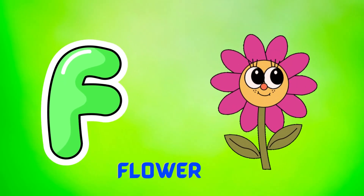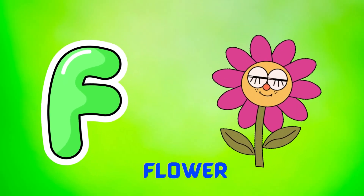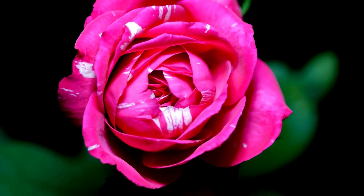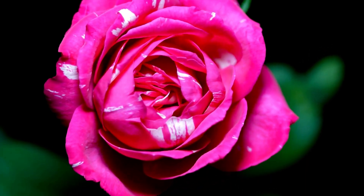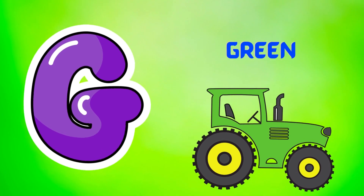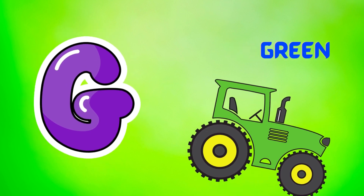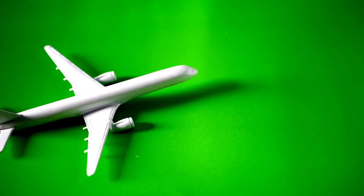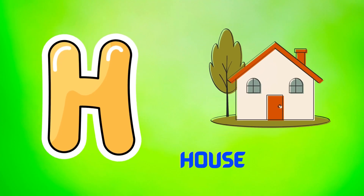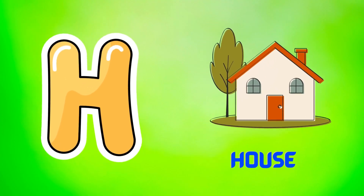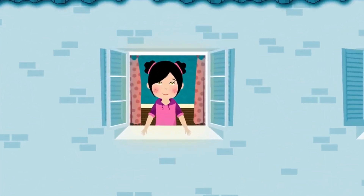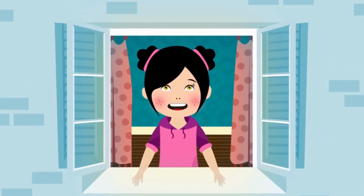F is for flower. Flower, flower, flower. G is for green. Green, green, green. H is for house. House, house, house.